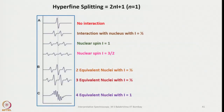To decide the number of lines, very similar to NMR, we use the 2Ni+1 rule. N is the number of equivalent species — nucleus or other species — and i is the spin value. We are considering N equals 1, so in the absence of any interaction, a radical or an anion would show only one line because of only the presence of one electron. When it interacts with one nucleus with spin i equals 1/2, we see 2 lines.